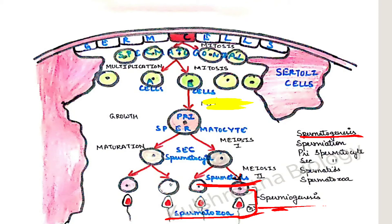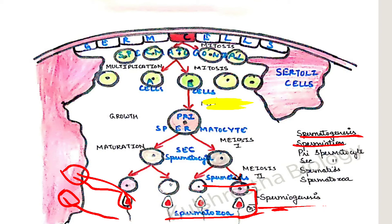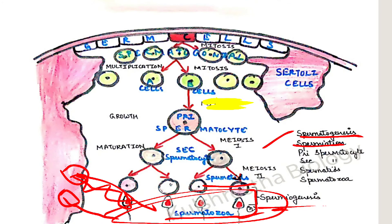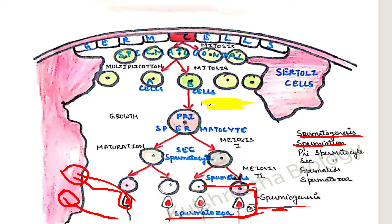The next term is spermiation. As I said, the spermatozoa are embedded in the Sertoli cells — their heads are embedded in the Sertoli cells. Now this head gets removed from the Sertoli cells. The process by which spermatozoa are released from the Sertoli cells and enter the lumen of the seminiferous tubule is called spermiation. So spermatogenesis, spermiogenesis, and spermiation — all three are now clear.